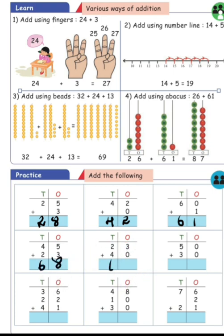23 plus 40, the answer will be 63. 50 plus 30, the answer will be 80.